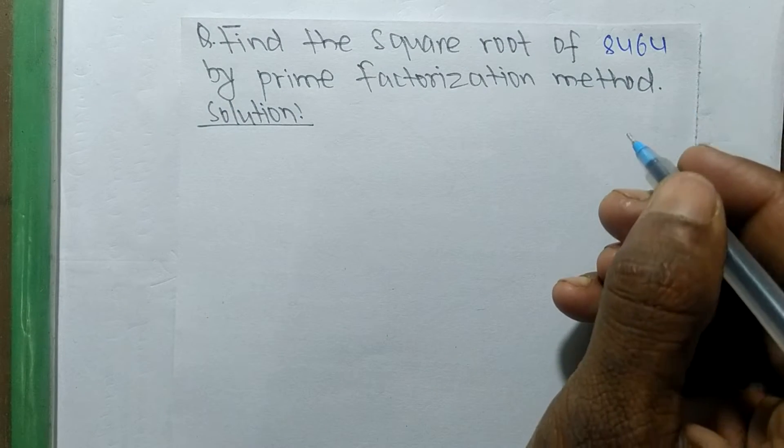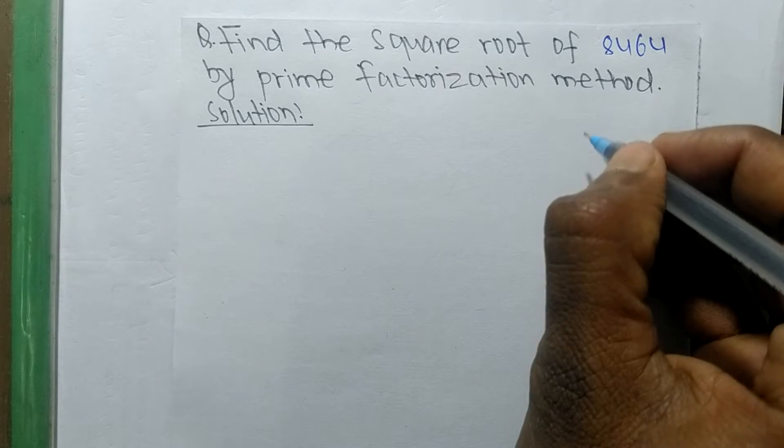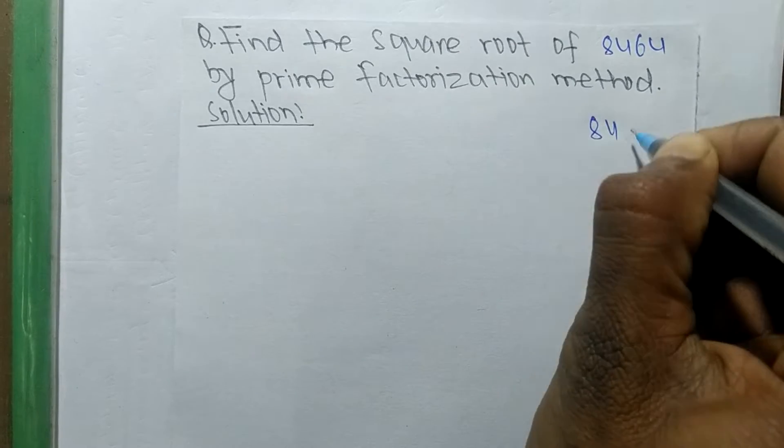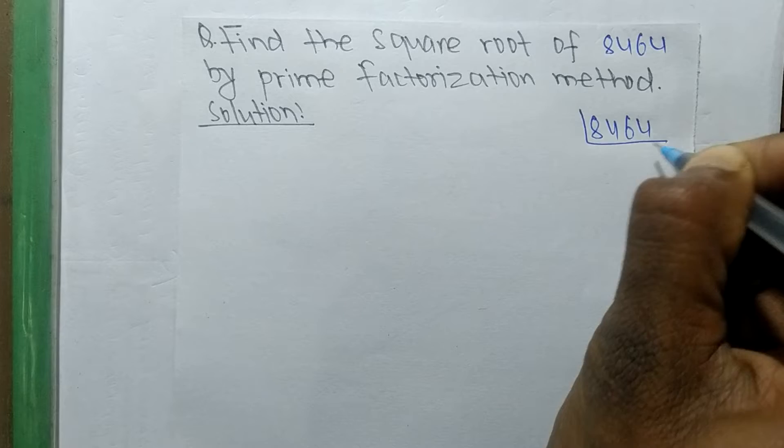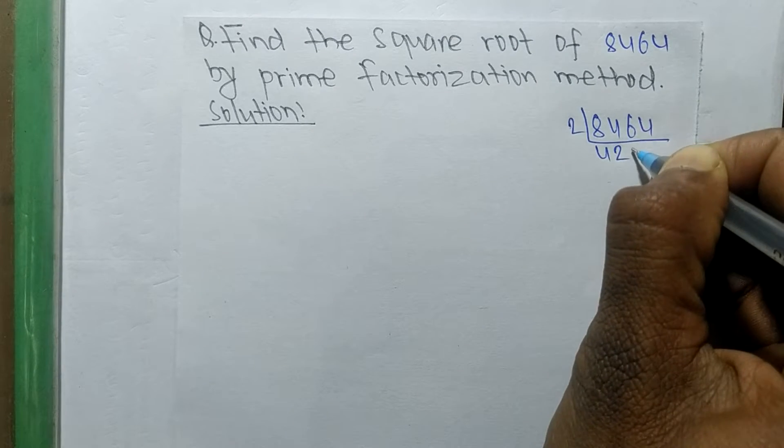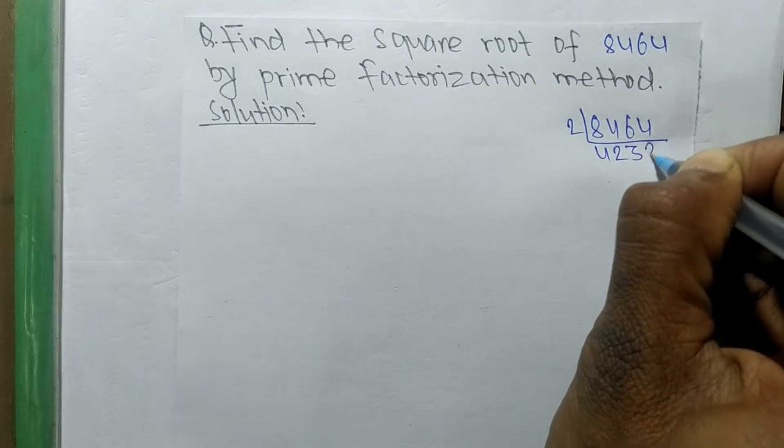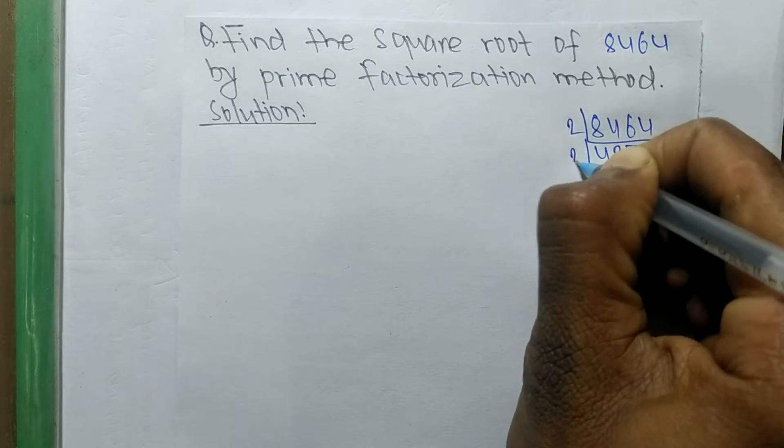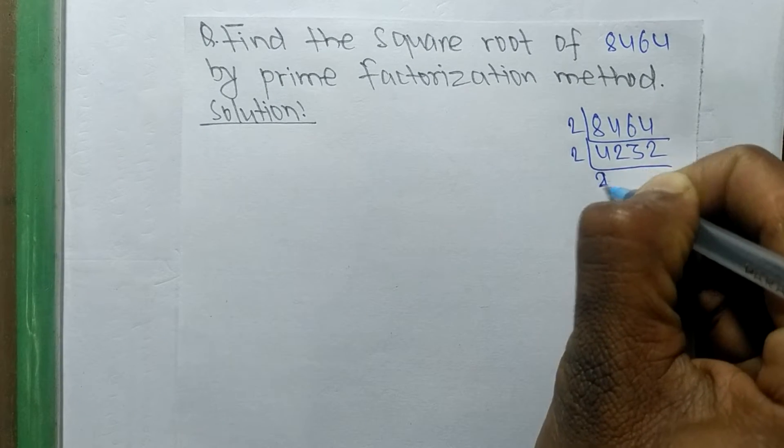First we shall find out the prime factors of 8464. So it is 2 times 4232, 2 times 2116, 2 times 1058, 2 times 529.